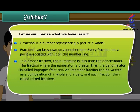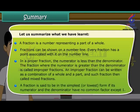In a proper fraction, the numerator is less than the denominator. The fraction where the numerator is greater than the denominator is called improper fractions. An improper fraction can be written as a combination of a whole and a part, and such fraction is then called mixed fractions. A fraction is said to be in the simplest or lowest form if its numerator and the denominator have no common factor except one.